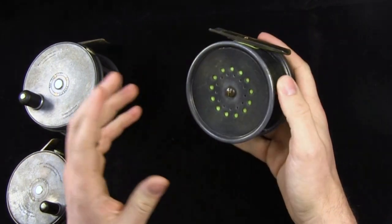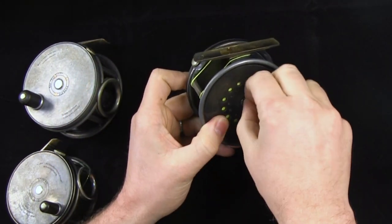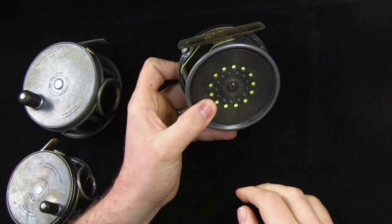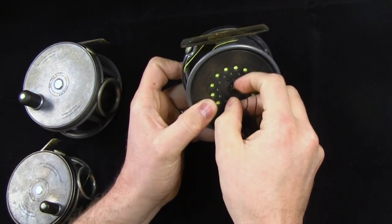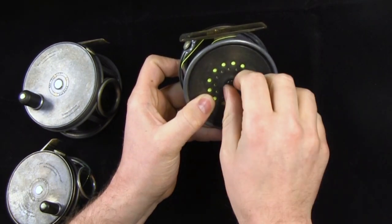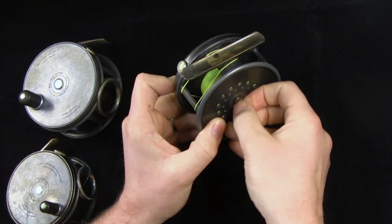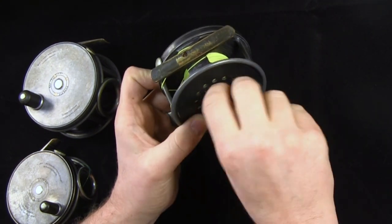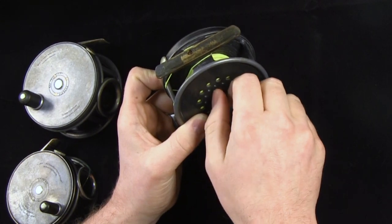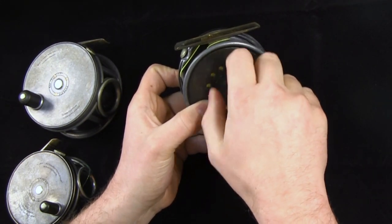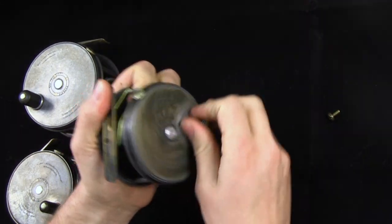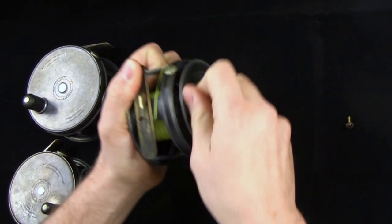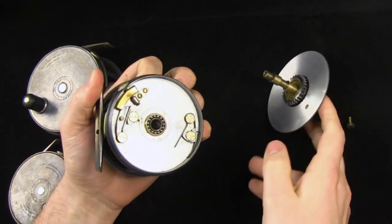Same way that the other one came apart, there's a retention screw that you have to back off the opposite way. I don't have a penny on me. You can also just take a fishing hook, put that in there, break the seal at it, and start to back off that screw. As that screw comes out, you can start to reverse wind.